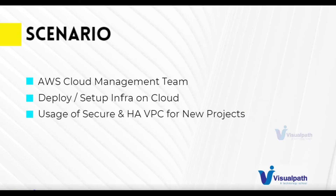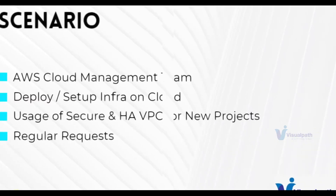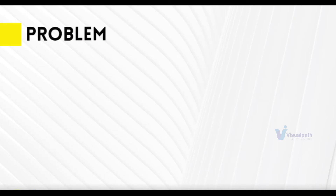This team will be in charge of setting up a VPC on AWS cloud to provide security and high availability to the project. They're also getting regular requests for deployment — project A needs a VPC, project B needs a VPC, project C, and so on. Many such regular requests keep coming in.